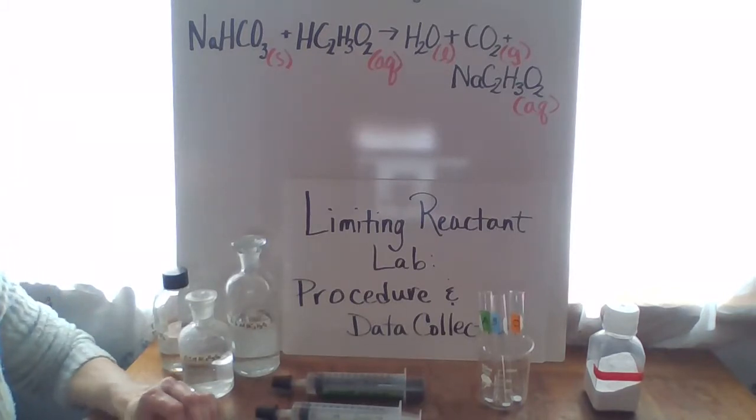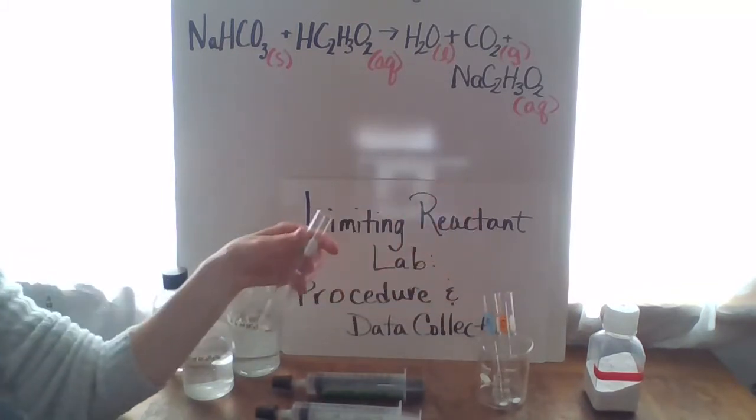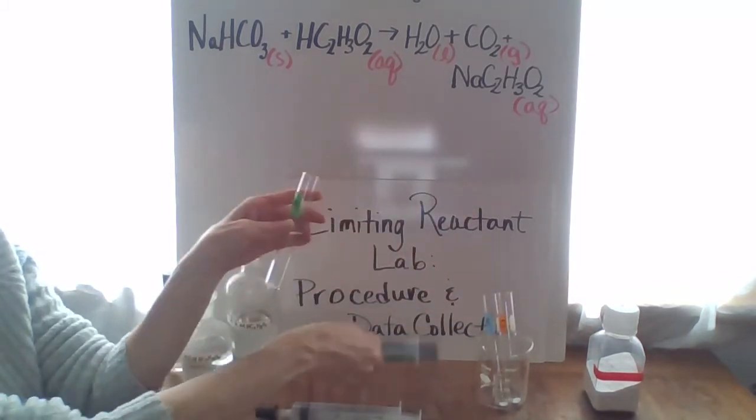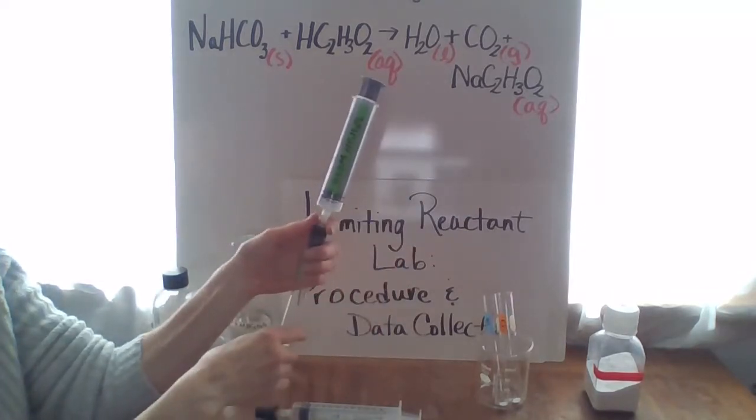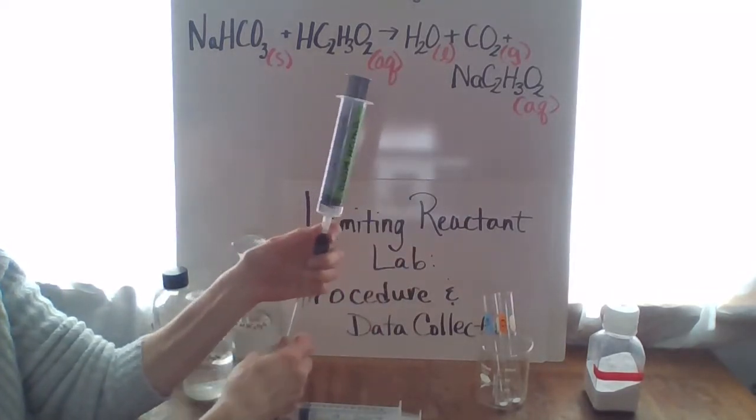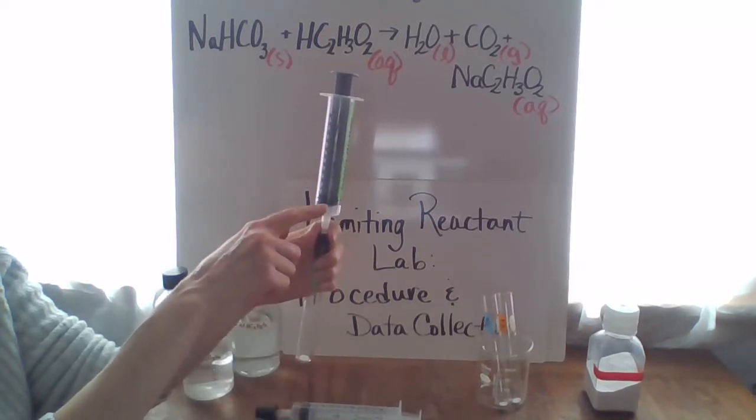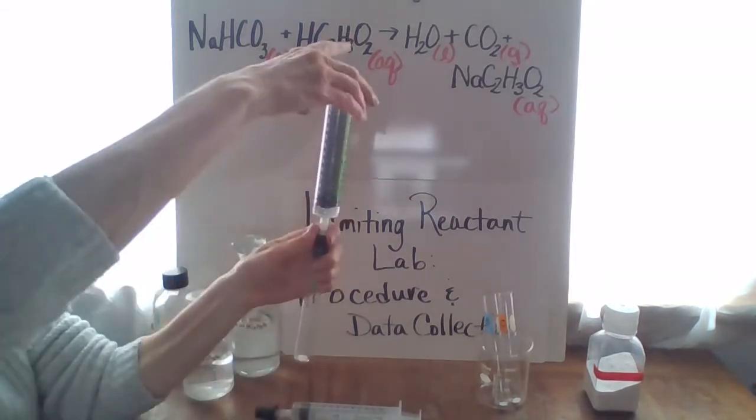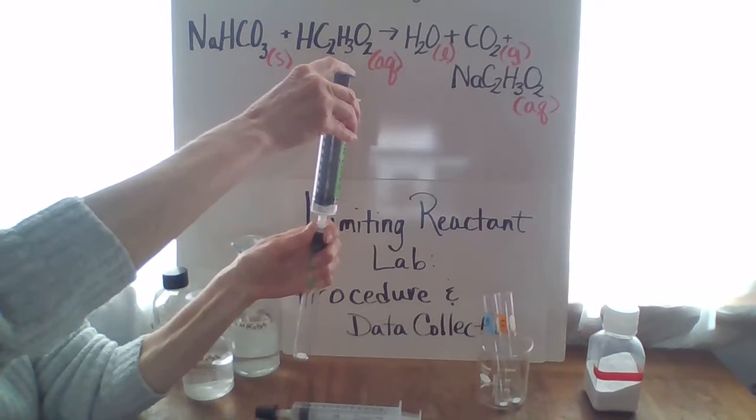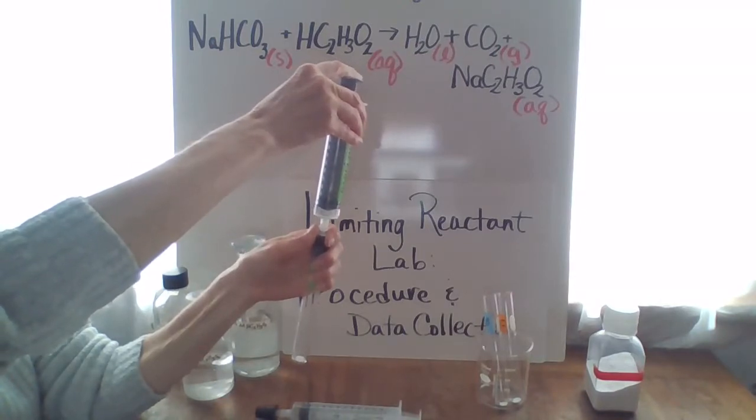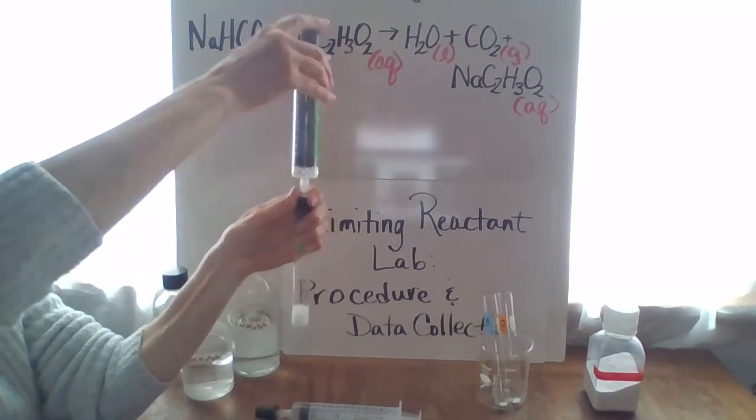I'm going to put those together, so if you follow along with the procedure I'll start with reaction A and attach the syringe and stopper to reaction A. We can see that right now I've drawn up five milliliters of the acetic acid. What I'm going to do is make sure that the stopper is sealed and then slowly add the acetic acid into the test tube.